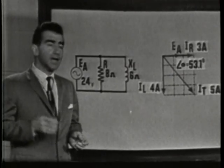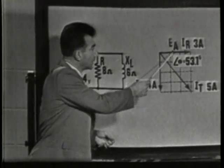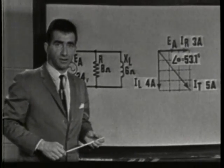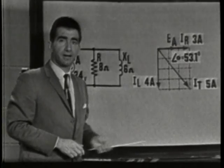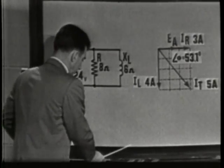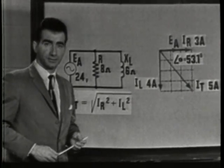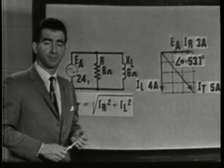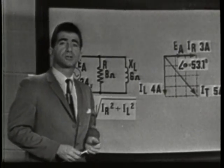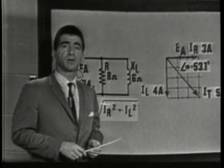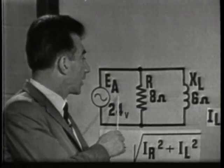Let's recap briefly. EA is the reference vector. IL and IR are used to show the phase differences in the circuit and may be determined by applying Ohm's Law. IT can be measured from the graph or calculated using the Pythagorean theorem: IT equals the square root of IR squared plus IL squared, which is a much more accurate method. Angle theta may be measured from the graph or found using the trig tables — which trig function you use depends on what you want to know. Total impedance is found by applying Ohm's Law.